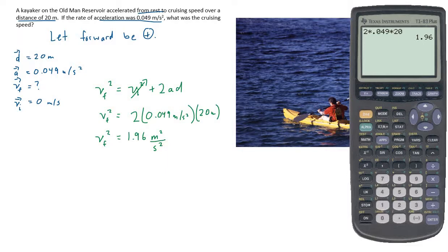So our next step should be to square root both sides of this so that we get just the final velocity because we don't want it to be squared. So the square root of that answer should equal 1.4.